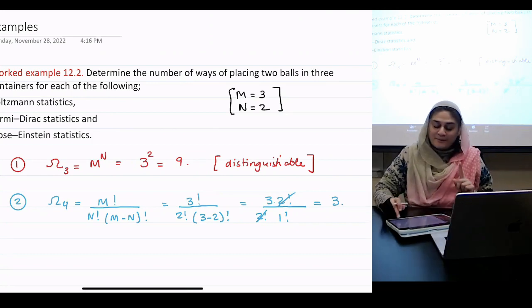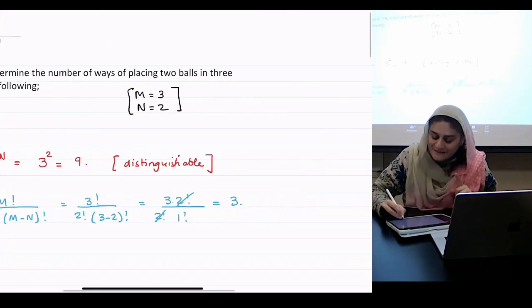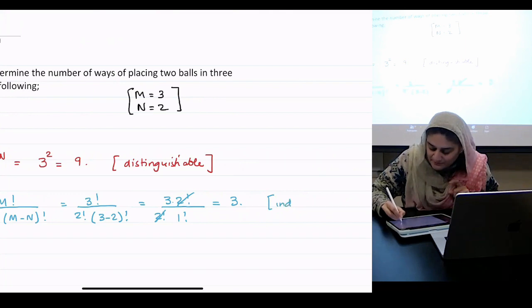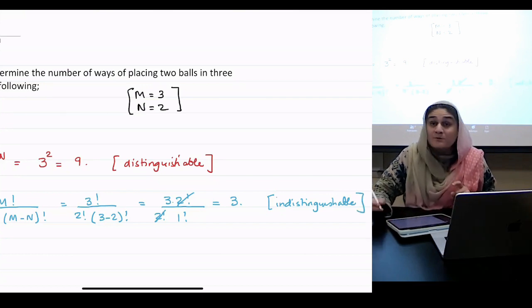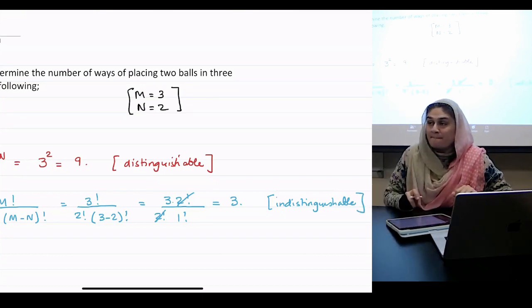And remember, for Fermi-Dirac, the balls are indistinguishable. But you cannot distinguish between the two balls. Those are going to be important when we start filling them in.